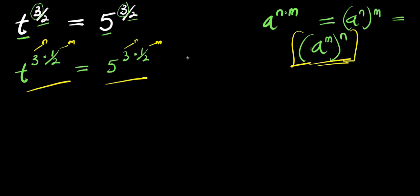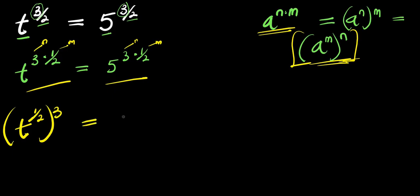Applying the identity, we get t to the power of 1/2, raised to the power of 3, equals 5 to the power of 1/2, raised to the power of 3.